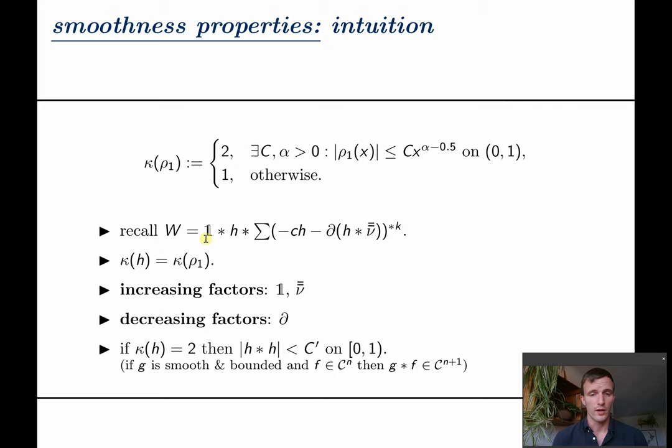Convolution with one equals integration and double bar ν is the tail function of bar ν. Thus we may add two degrees of regularity. However taking the derivative here we have to subtract one degree again. But if κ of h equals two